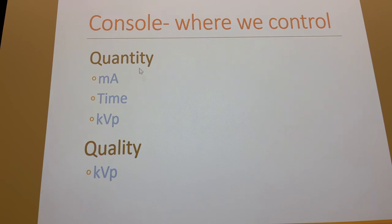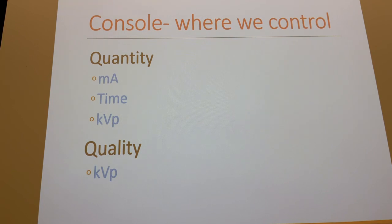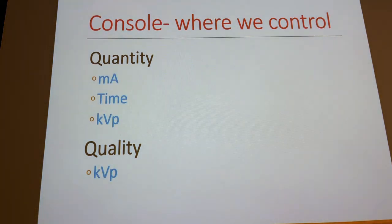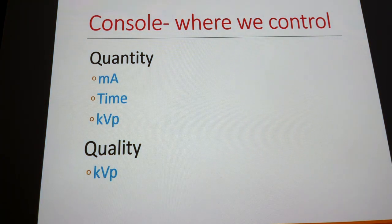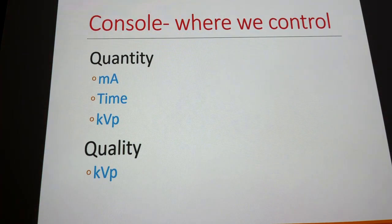For quantity, we use KVP, MA, and time. For quality, we use KVP — as we'll discuss as the semester goes on, there are other factors, but that's the main approach. From the control panel, we also control other things like focal spot size and photocell selectors.